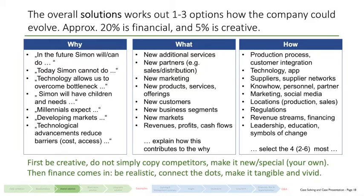Technology can allow us to overcome bottlenecks. Today Simon is very happy, but maybe in the future he will have children, which changes his needs. Or if you look at the workforce, our workforce today might be quite happy, but millennials are coming and we need to know what they expect. Or we move into developing markets or technologies improve. That's basically the 'why' part — why do we need a new solution? Why do we have to change?